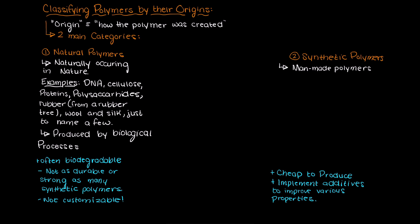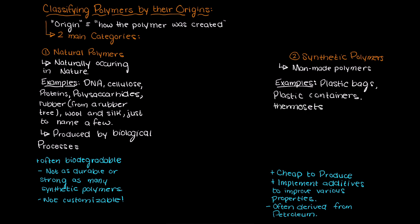However, synthetic polymers are often derived from petroleum and due to their inability to degrade pose an environmental threat on both fronts — that is to create the polymer and to discard the polymer. Some common synthetic polymers that you may be familiar with are plastic bags, plastic containers, some thermoset plastics used in the automobile industry, and tons of other amazing applications.